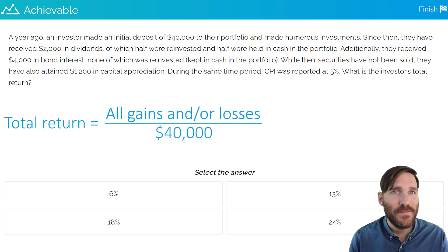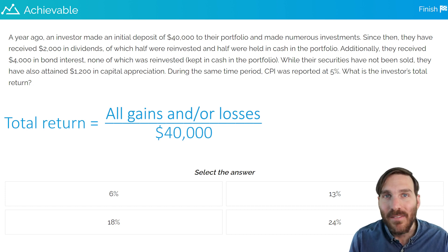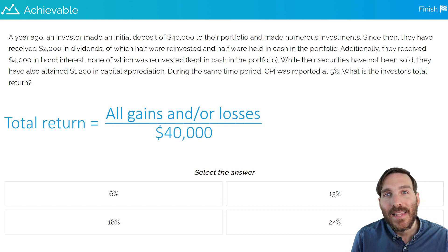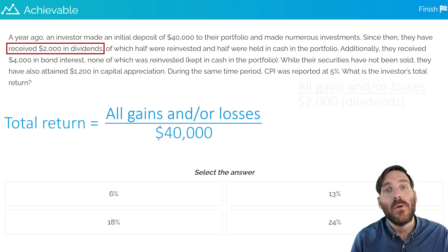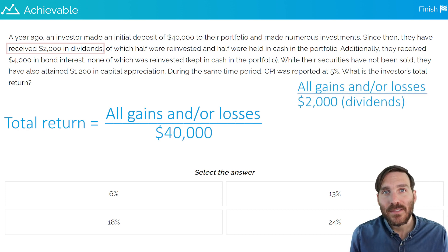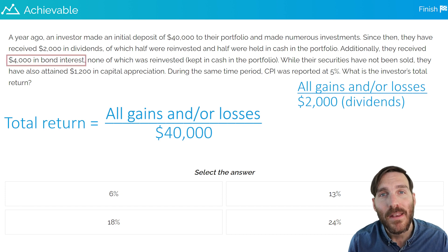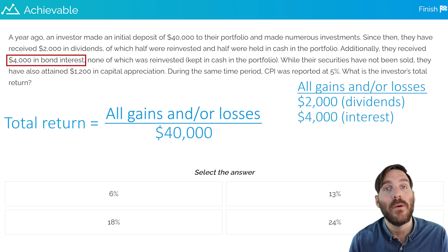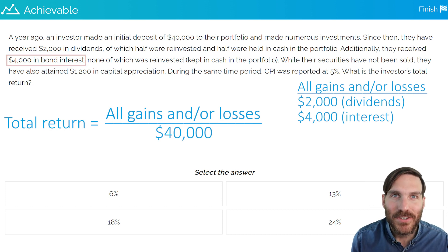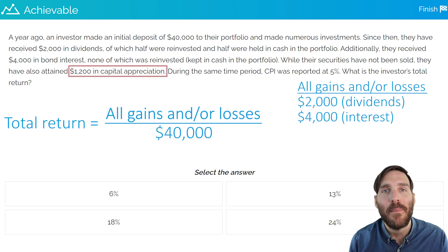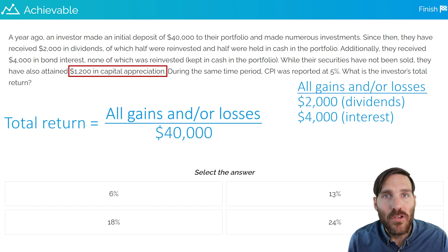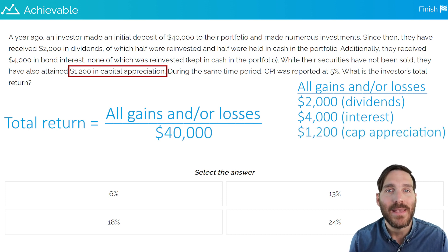Now the top part of this formula is the difficult part. But good news — we just have to take our time and go through the question methodically, making sure we're accounting for everything along the way. In the second sentence, the investor receives $2,000 in dividends. That will be part of the investor's gains, so we will account for that on the side: $2,000 in dividends. The third sentence tells us the investor received $4,000 in bond interest. This is also part of the gains, so we'll account for that as well. The next sentence mentions that the securities have not been sold, so these are unrealized gains. But there's $1,200 of capital appreciation in the portfolio. Capital appreciation is growth, also known as a capital gain. That is something we will account for on the side as part of our total gains and/or losses.